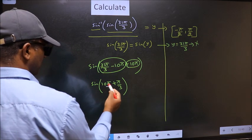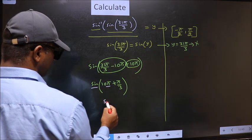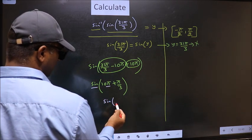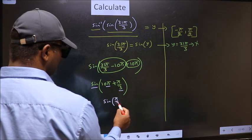Here we have π, so sign is not going to change. It will remain sin, and inside we get this angle π by 3.